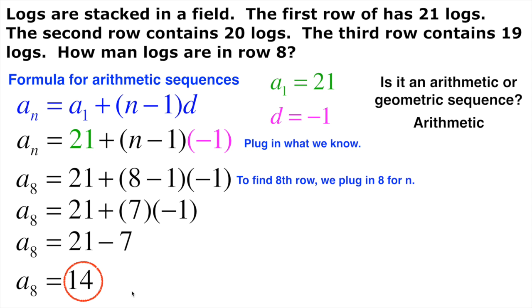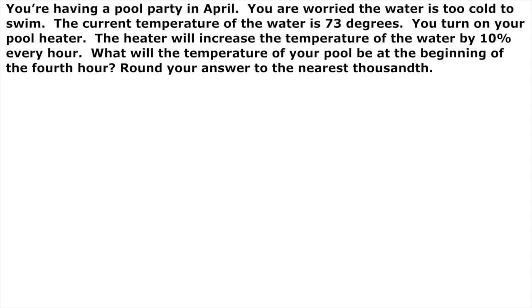Now let's look at another one here. Okay, this one, we're having a pool party. And it's in April. In April, depending on where you live, the water can be a little chilly. So the current temperature of the water is 73 degrees. So you decide to turn on your pool heater. And the heater increases the water temperature. But it doesn't do it all at once. It increases the water temperature by 10% every hour. So the first hour, it's going to go up 10%. The next hour, it will go up 10% over the previous hour. What would the temperature of the pool be at the beginning of the 4th hour?